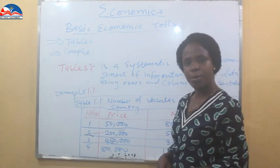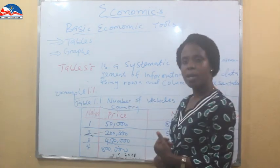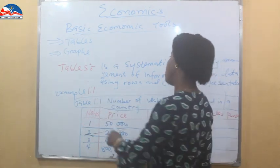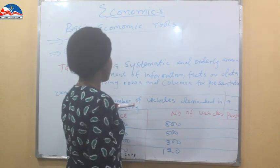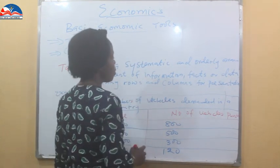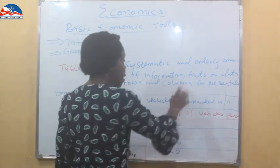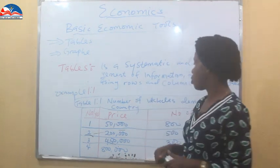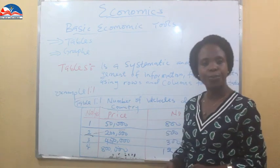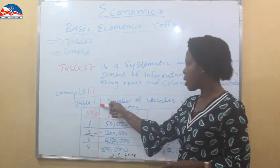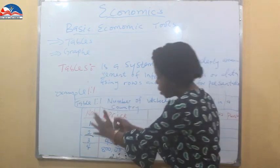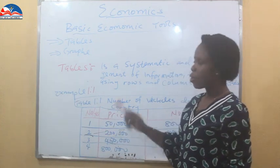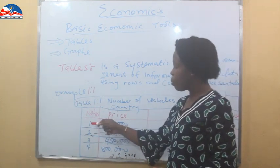What are the features of a table in analyzing economic tools? First, a table must have a title. If you look, this is Table 1.1 and this is the title: 'Number of Vehicles Demanded in a Country.' That's the title. Second, the table must be numbered. You can see in my rows I have 1, 2, 3, 4. So remember it must have a title, and it must be numbered.